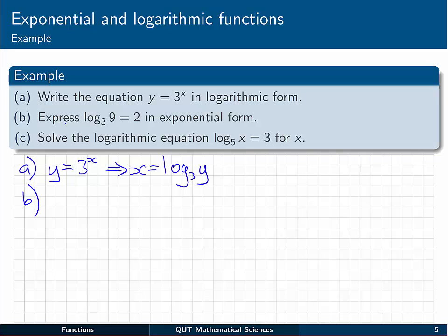Now in part b, we're asked to express log base 3 of 9 equal to 2 in exponential form. This is essentially the reverse action. So log base 3 of 9 equal to 2. We're going to use the base of 3, raise that to the power on the right hand side, and that's equal to the number that we took the log of in the first place. Now of course that's fairly obvious to us that 3 squared is equal to 9.